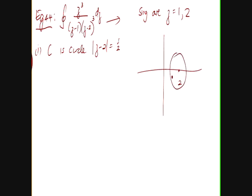So, since the radius is just half, the point 1 will be outside, so only z equals to 2 is inside the contour.